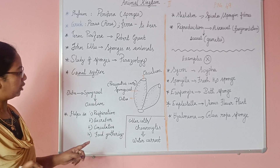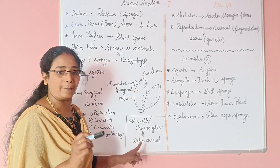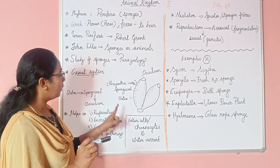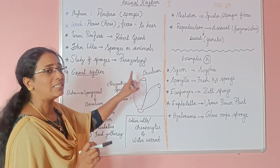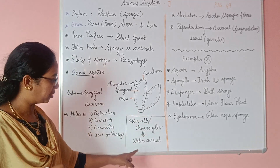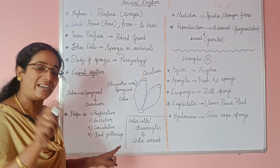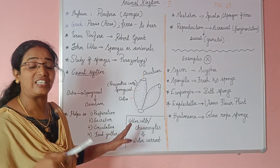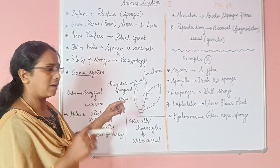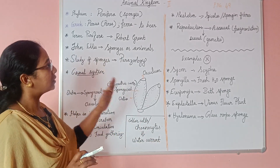The next important question is: what are the collar cells? The collar cells are called choanocytes. The choanocytes line the spongocoel. Their important function is creating water current in sponges. So the cells creating water current in Porifera are choanocytes, or collar cells.